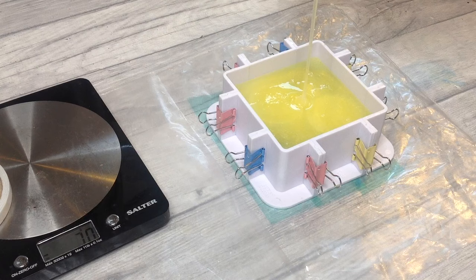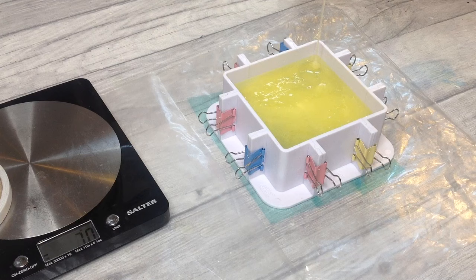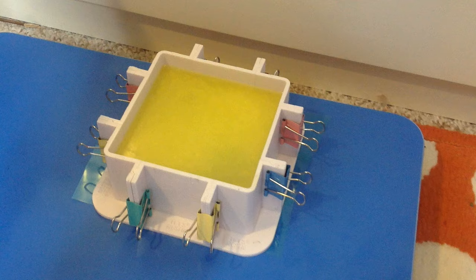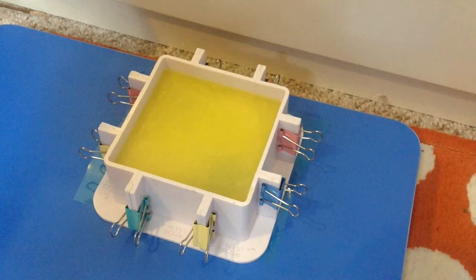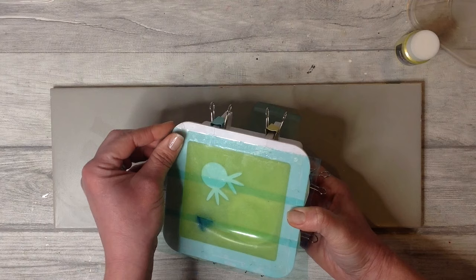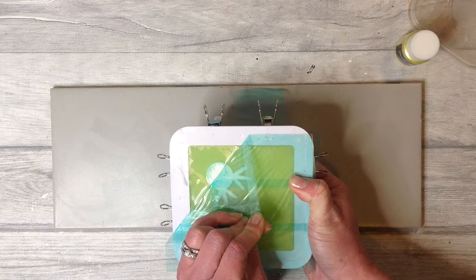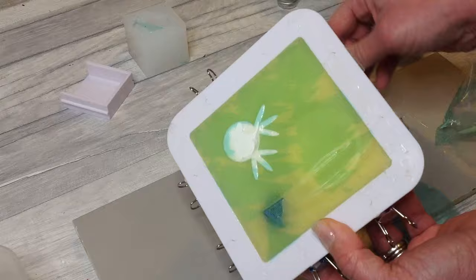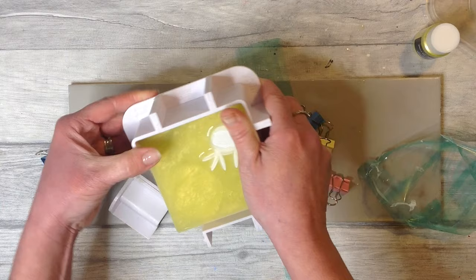We just now need to leave it to sit and cure for about 24 hours. I want mine nice and level so I'm placing it on my levelling table to cure overnight. Overnight it has cured. I did have a few little issues I'll show you at the end but we easily just take off the tape, remove the clips to release our brand new ready to use silicone mould. See how easily the sides come away and there's no mess.